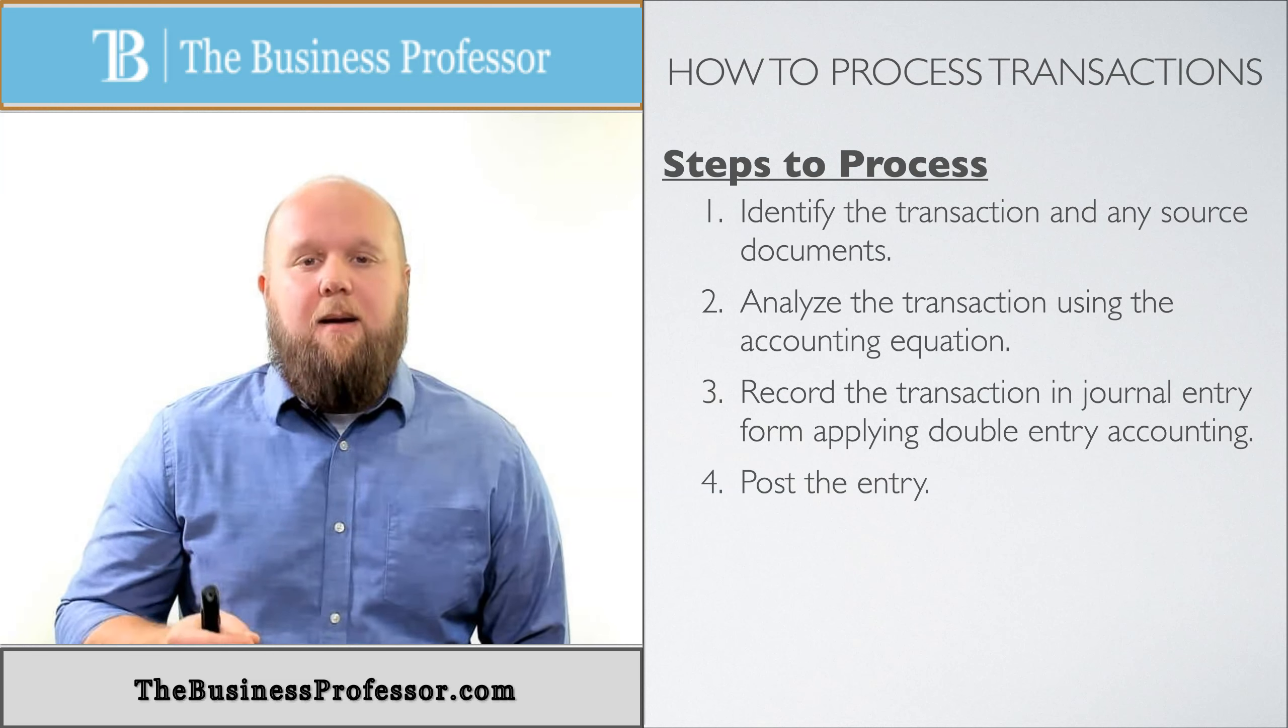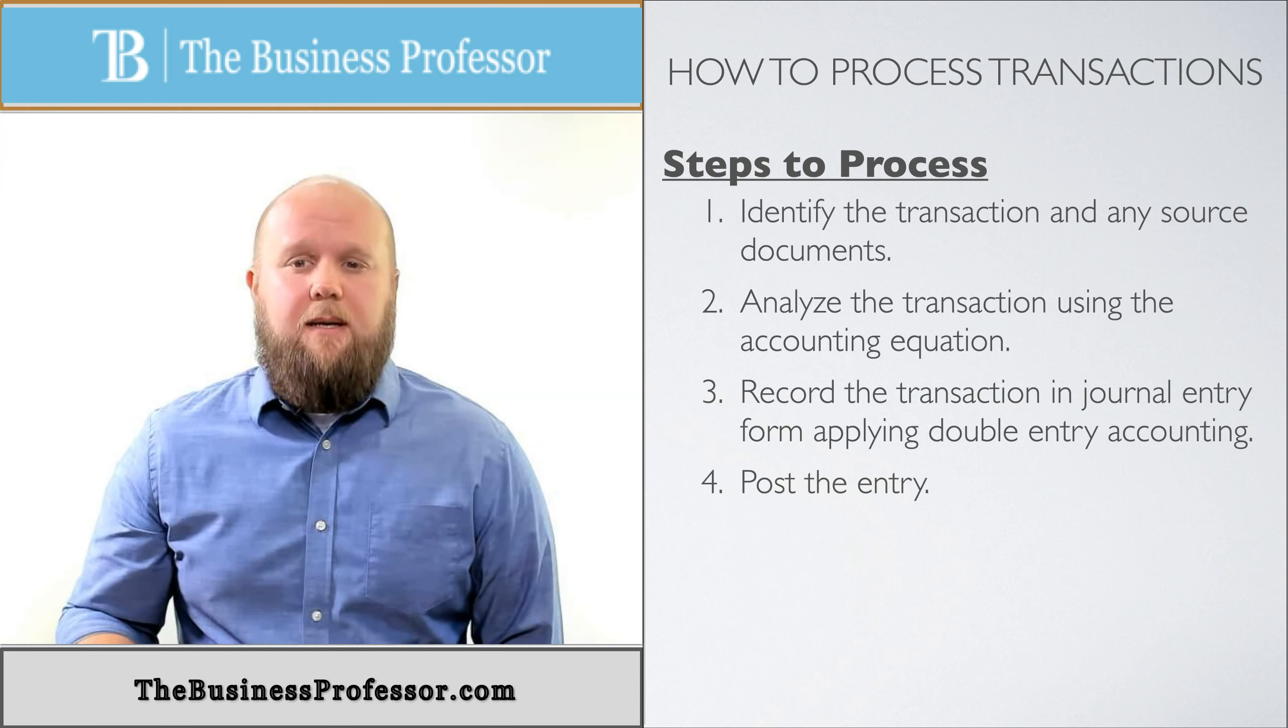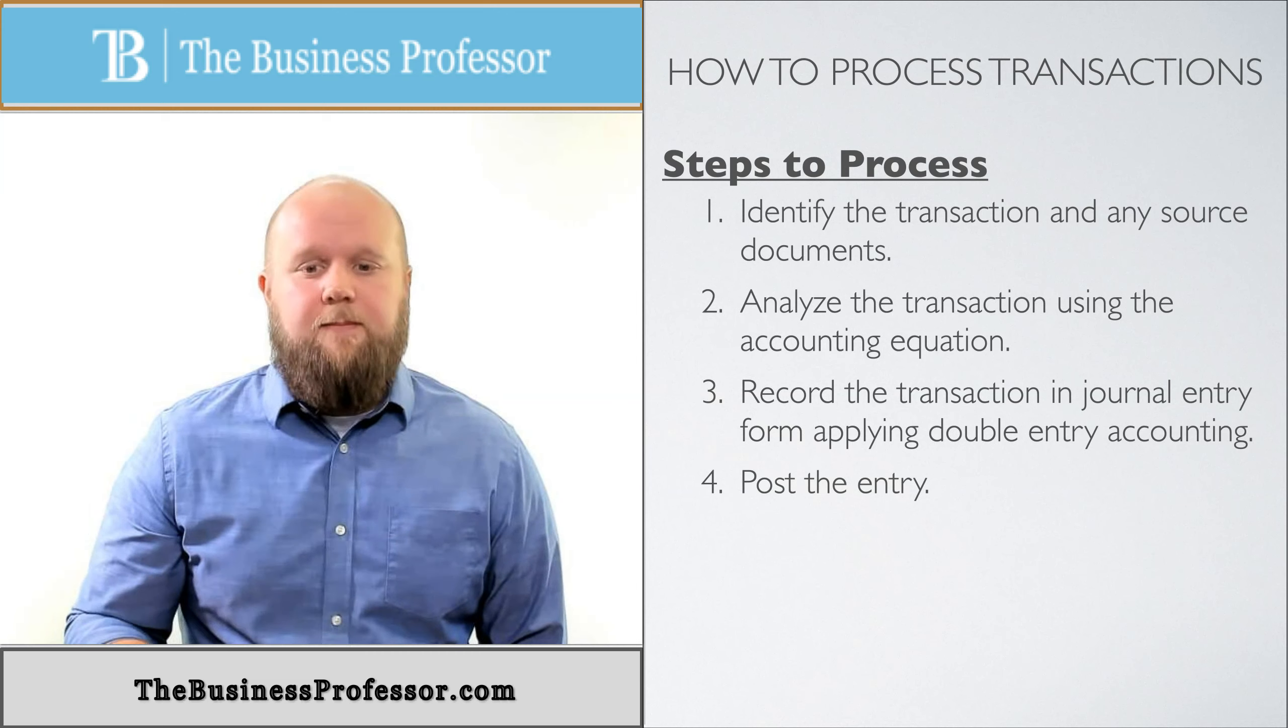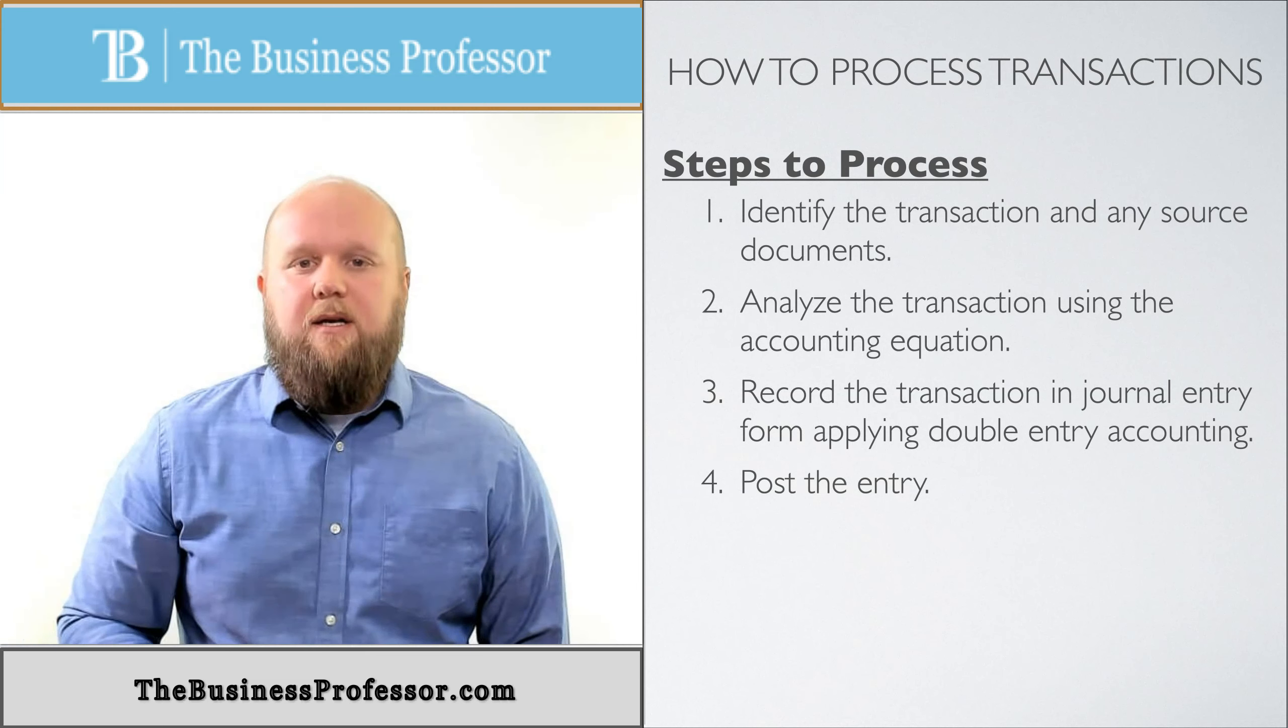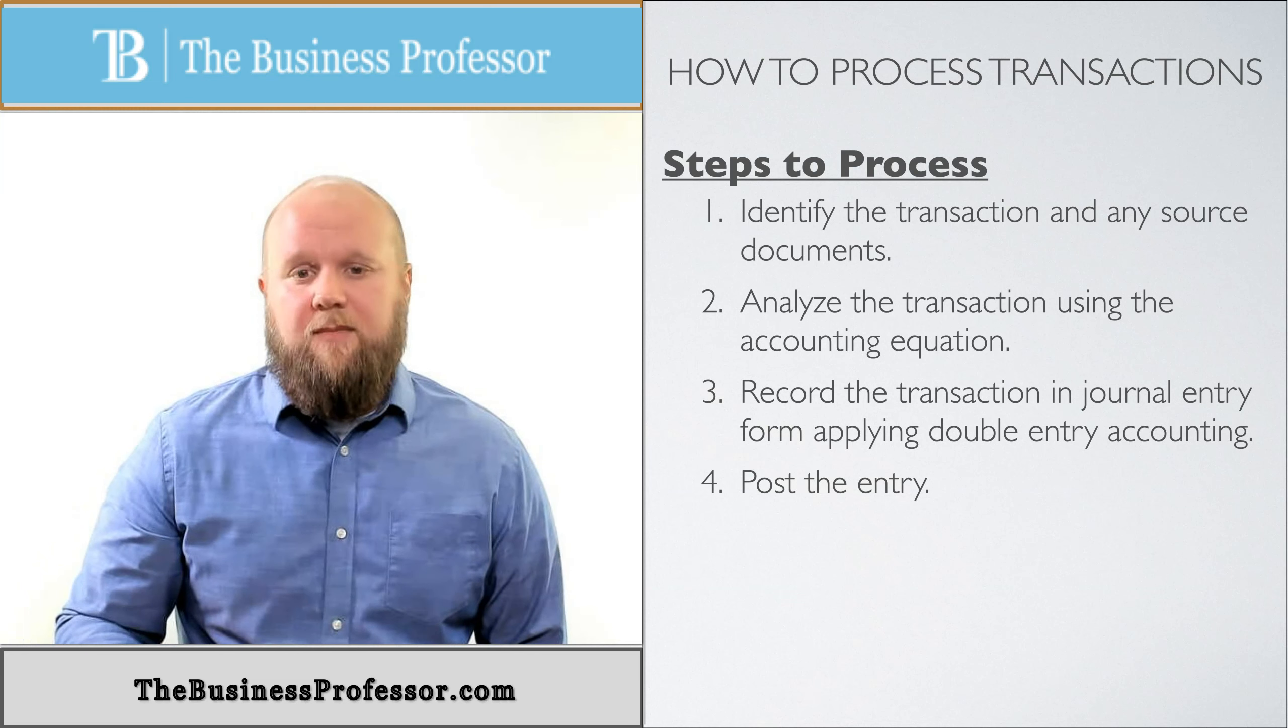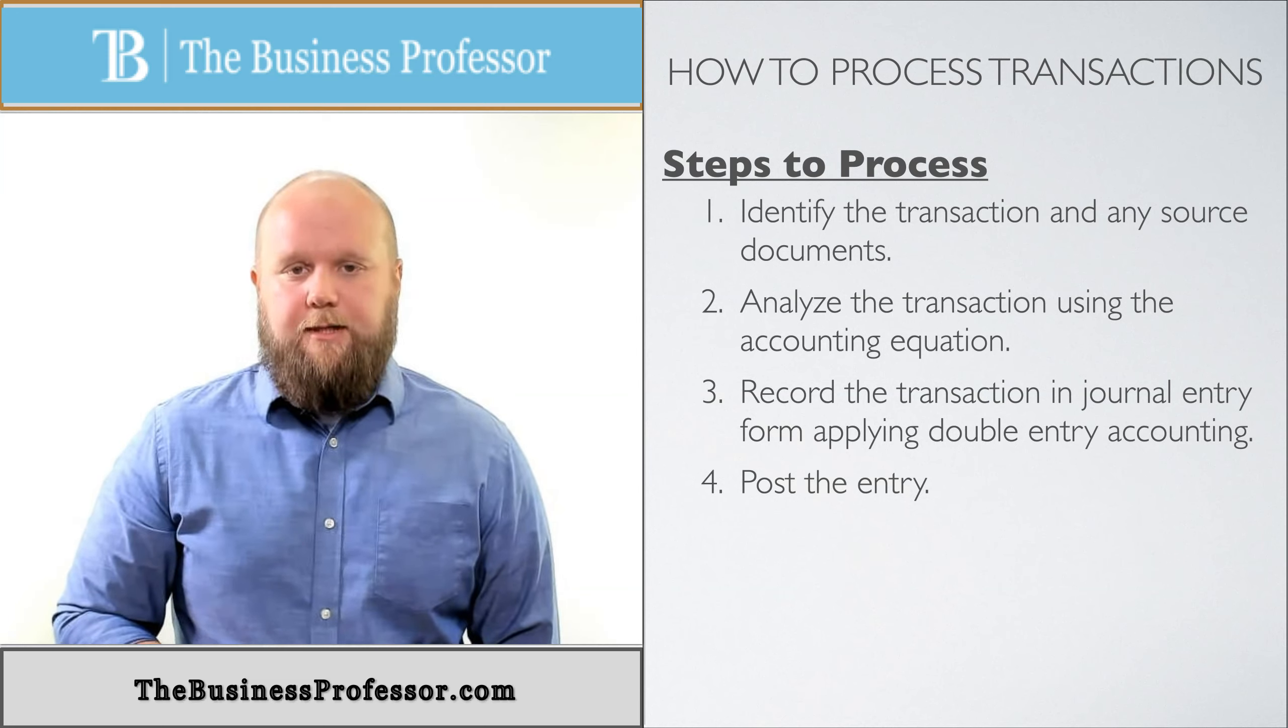And then finally, the fourth one is I post the entry. I put it into the t-tables. That is the four-step process of journalizing transactions. You follow those transactions, you're going to get every one of them right away. It's just a matter of the analyzing side of it. So that's how you process them. That's how we get into the accounting cycle.